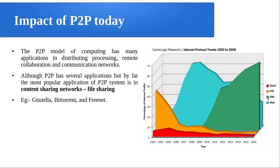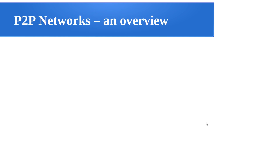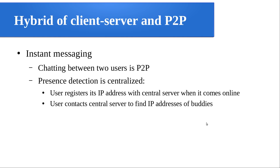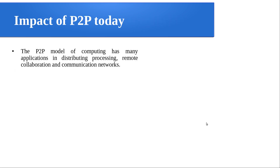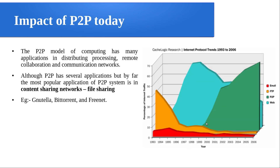A study done by Cache Logic research shows P2P traffic in this green color. They took email application in red, web application in blue, P2P in green, and FTP in yellow. You can see that P2P is somewhat dominating. This study was done over different years showing the percentage of internet traffic.